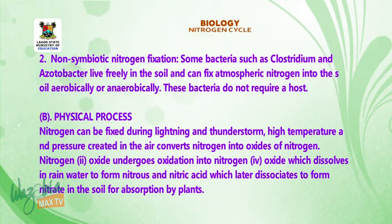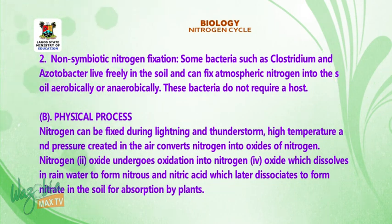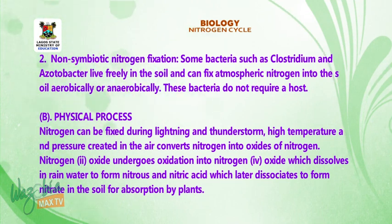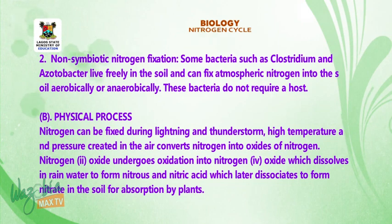Physical process. Nitrogen can be fixed during lightning and thunderstorms. High temperature and pressure created in the air converts nitrogen into oxides of nitrogen. Nitrogen dioxide undergoes oxidation into nitrogen tetroxide, which dissolves in rainwater to form nitrous and nitric acid, which later dissociates to form nitrates in the soil for absorption by plants.